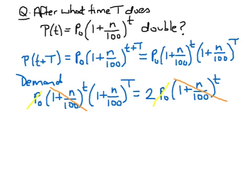We can rewrite our equation as (1 + n/100) to the capital T equals 2. Little t has cancelled, so the doubling time is independent of when you start. If an investment doubles in one year, it will double from January to January, or from June to June.